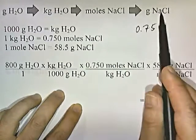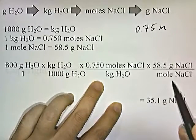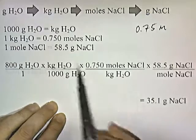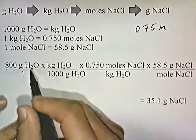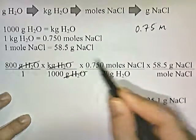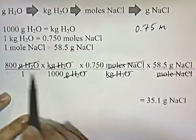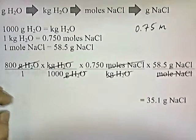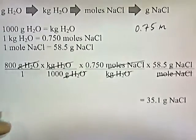Now from moles of NaCl to grams of NaCl: I've got moles of NaCl on top, so I put moles of NaCl on the bottom and 58.5 grams of NaCl on top, because 1 mole of NaCl equals 58.5 grams. Grams of H2O cancel, kilograms of H2O cancel, moles of NaCl cancel, and we're left with grams of NaCl. So 800 times 0.75 times 58.5 divided by 1,000 gives 35.1 grams of NaCl — meaning 35.1 grams of NaCl are dissolved in 800 grams of water at that molality.